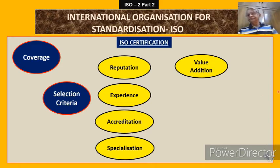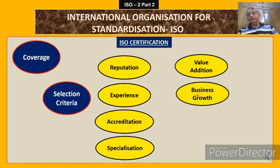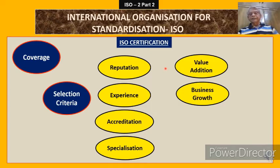The sixth criterion is business growth. The certification body must be helpful in growing your business. There are two things here. One is that whatever certification body you select, you have to see that as your business grows — maybe today you are going for QMS, but maybe tomorrow you will ask for EMS, IATF, or OHSAS — there are different certification standards. So your certification body must be capable of certifying you for various standards. Otherwise, you will have to select different bodies for different systems, which will add to your cost. They should have all the specialization required for your future business growth.